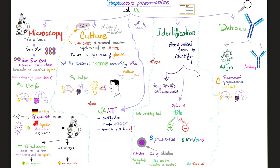What is the Quellung reaction? It's German for swelling — swelling of the bacterial capsule. Here's how you do it: you bring the Streptococcus pneumoniae, then you add anti-capsular antibodies — antibodies that will try to attack the capsule. Lump them together and stick them on a slide.